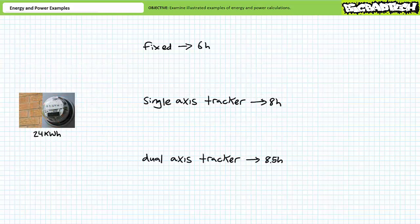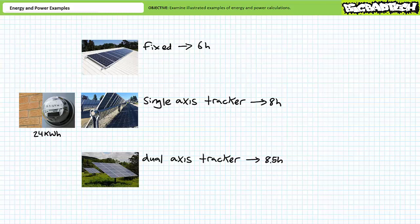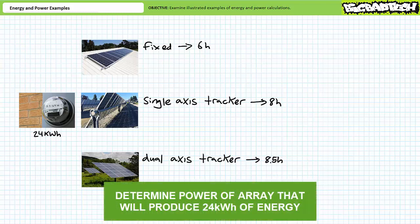Our next illustrated example features a household known to consume 24 kilowatt hours of energy a day on average. The owner is considering investing in a PV system, located in a sunny area that regularly experiences peak sun for varying lengths of time depending on the mounting configuration. Three options exist: a fixed tilt stationary roof mount experiencing six hours of peak sun, a single axis tracker — which follows either the sun's elevation or orientation — experiencing eight hours of peak sun, and a dual axis tracker — following both elevation and orientation — experiencing eight and a half hours of peak sun. Determine the power rating of the solar array necessary to produce 24 kilowatt hours daily for each mounting configuration.